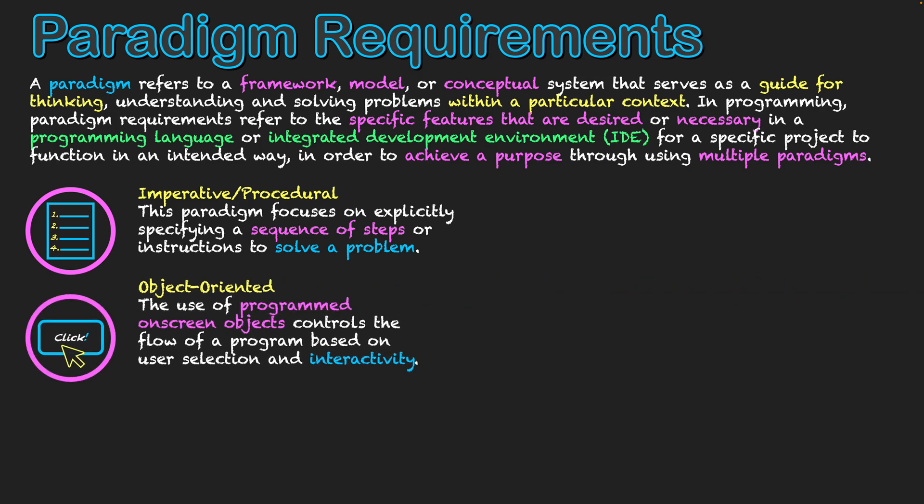Secondly, we have object orientation. This is the use of onscreen objects, and these objects control the flow of the actual program based on the user's selection and their interactivity with the program. There isn't a fixed structure for how the user goes through the program — it's going to be based on what objects they are clicking on. Each different onscreen object is coded as its own individual unit, but they relate to each other in their execution of code.